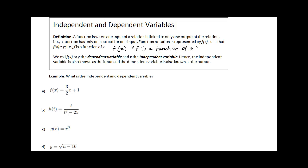Now what do we mean by this? We call f of x or y the dependent variable. The reason why is because this value, y or f of x, is dependent on the value of x. x is the independent variable. Whatever variable is inside the parentheses of your function is the independent variable, and the entire function would be the dependent variable.